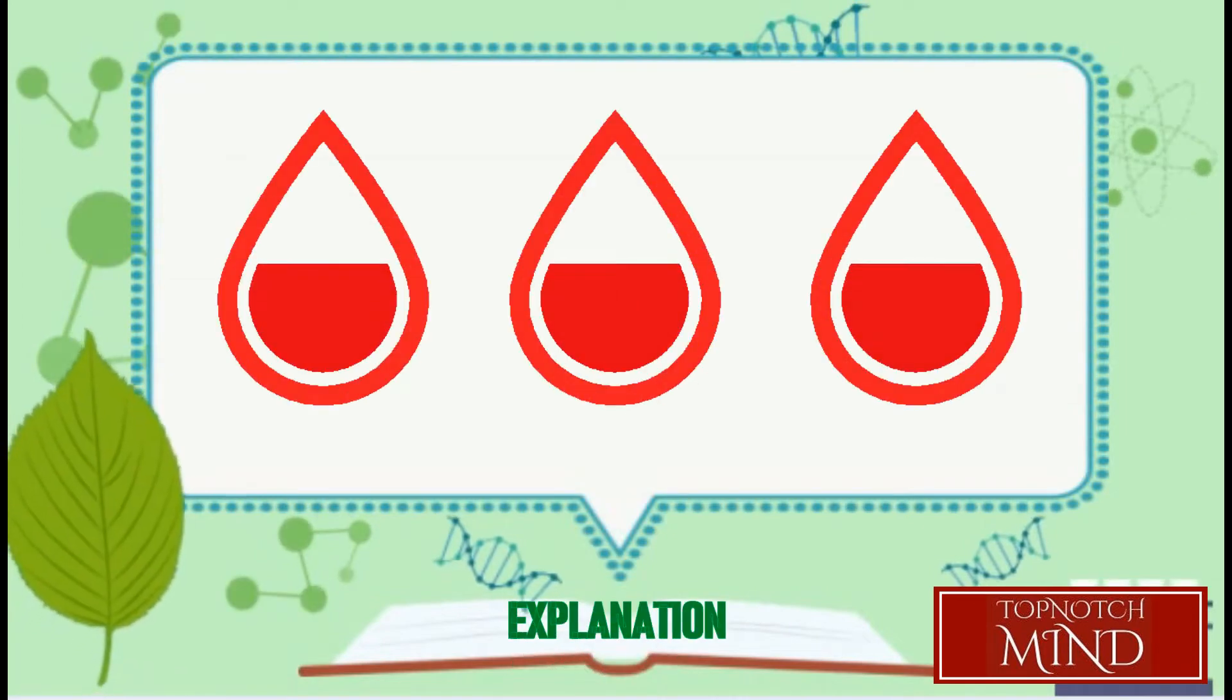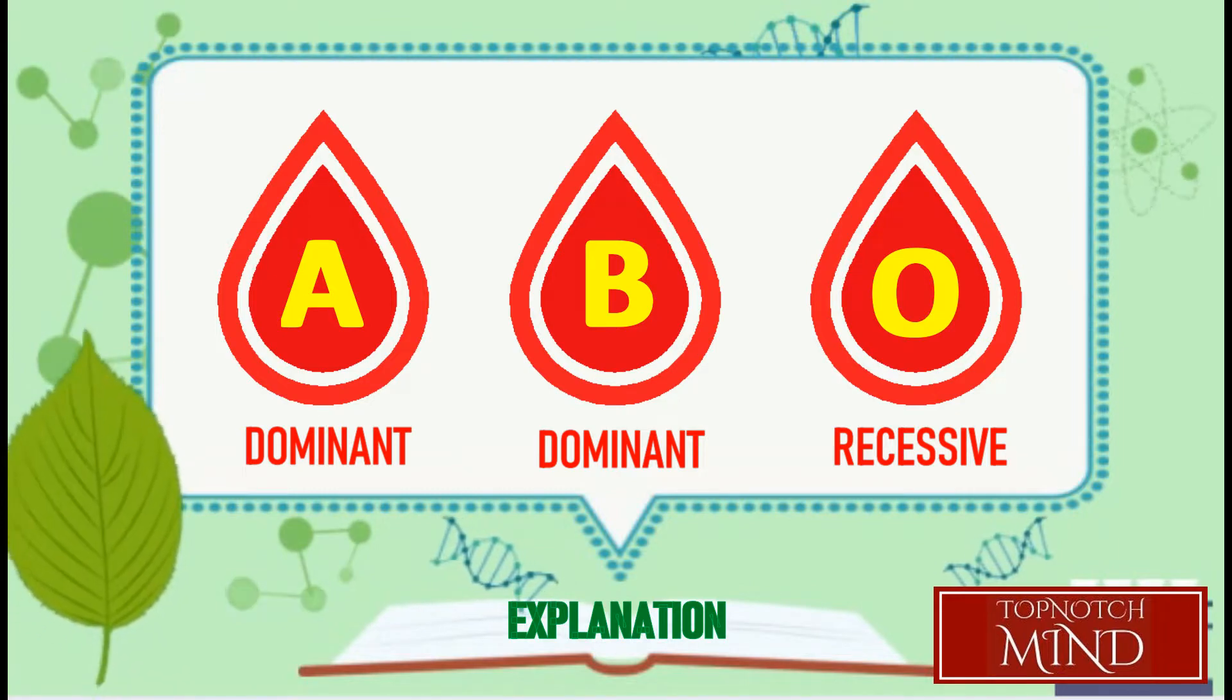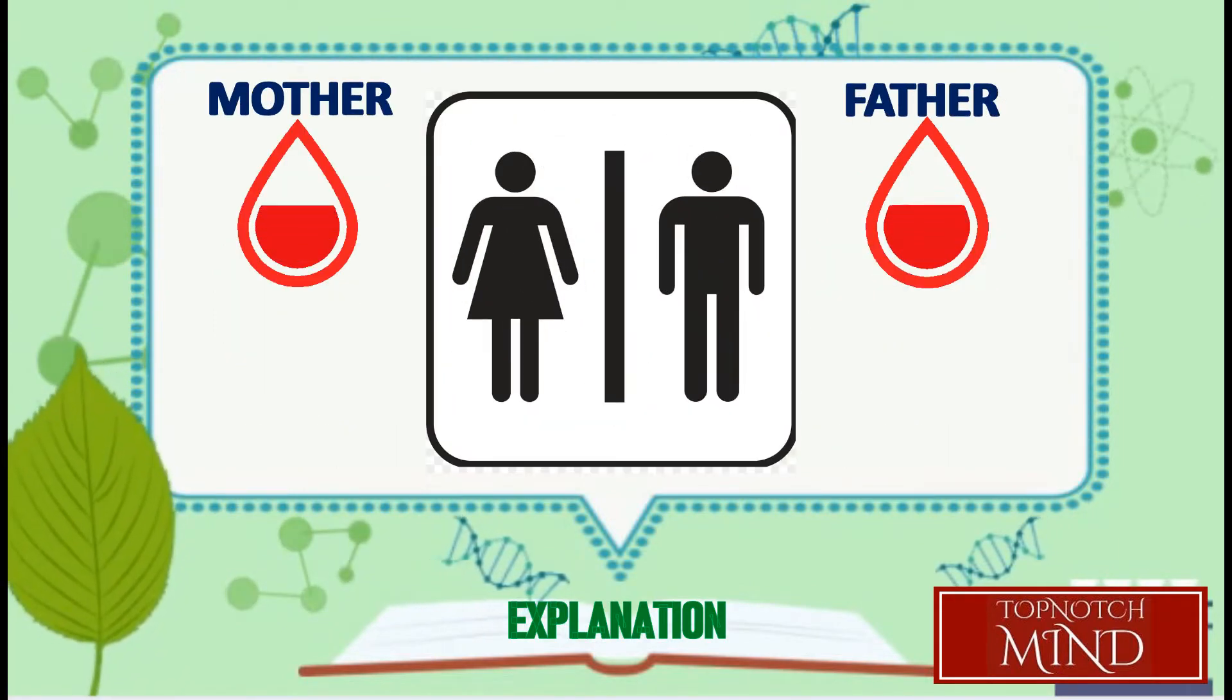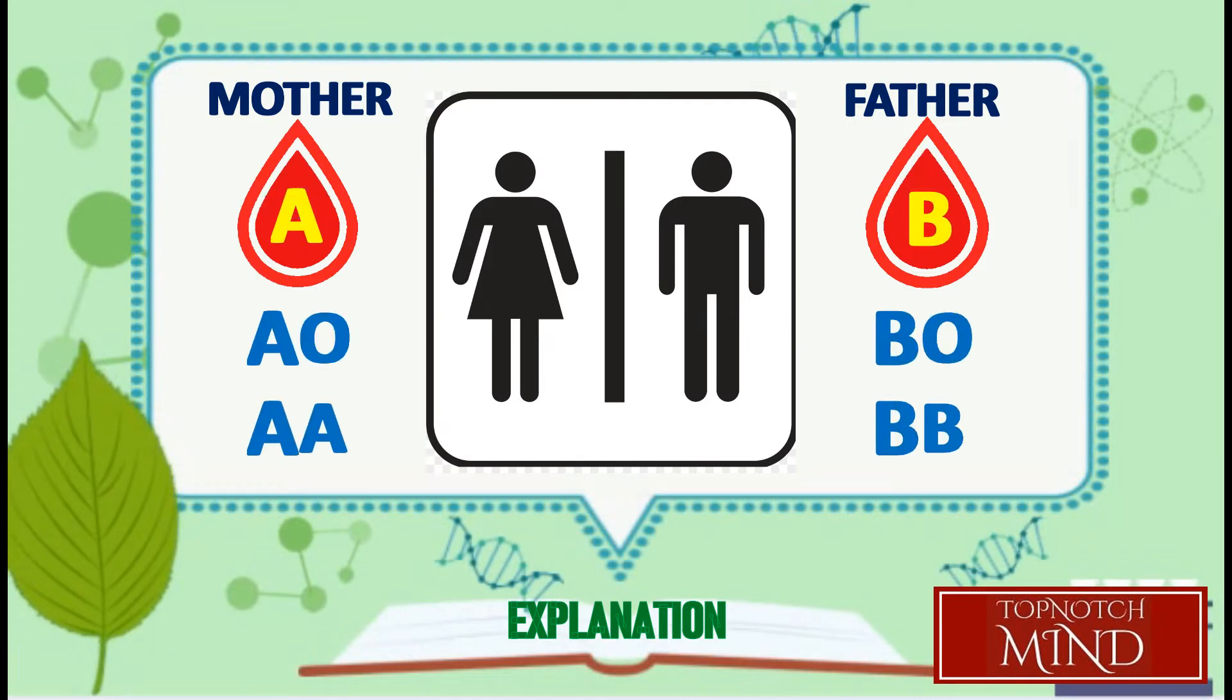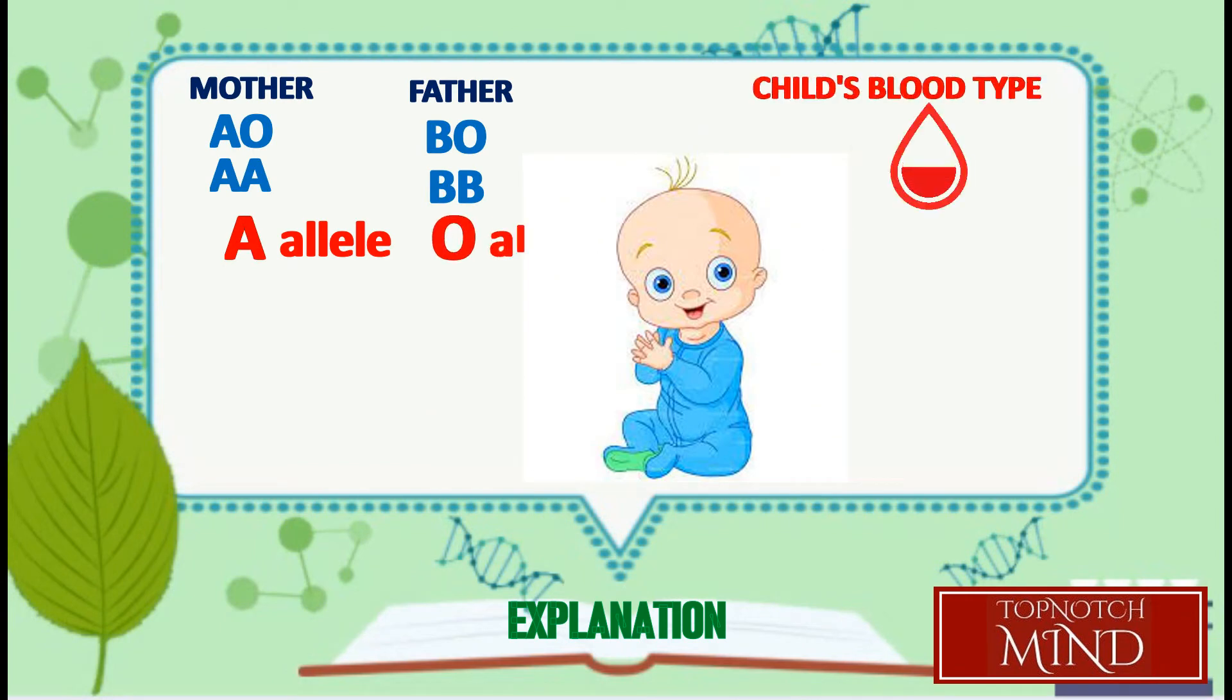In humans, blood type is determined by three alleles: A, B, and O. Both the A and B alleles are dominant to the O allele. Since the mother's blood type is A, her possible genotypes are AO and AA, while the father's are BO and BB. When the mother's A allele combines with the father's O allele, the child's blood type will be type A, as A allele is dominant to O allele. When the mother's O allele combines with the father's B allele, the child's blood type will be type B, as B allele is dominant to O allele.